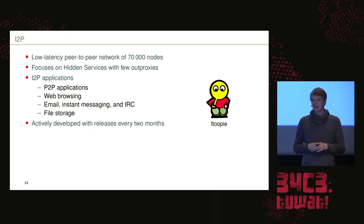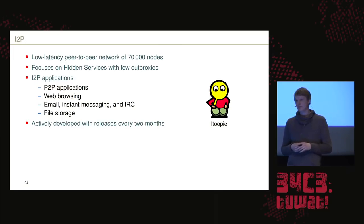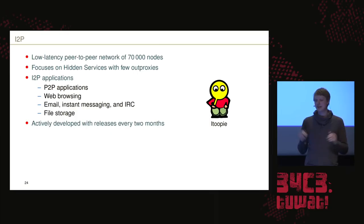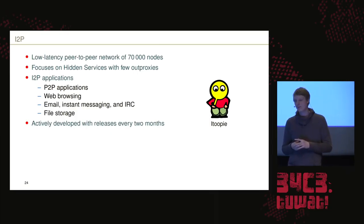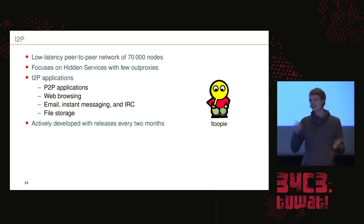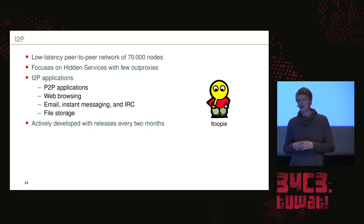I2P focuses on hidden services. It's not intended for use like the legacy internet — there are a few out-proxies, so you can access some normal websites, but that's not its intended use. Typical I2P applications are peer-to-peer applications, which include file sharing and BitTorrent, web browsing, email, instant messaging, IRC, and file storage. The I2P community is quite active and has released updates every two to three months in recent years.